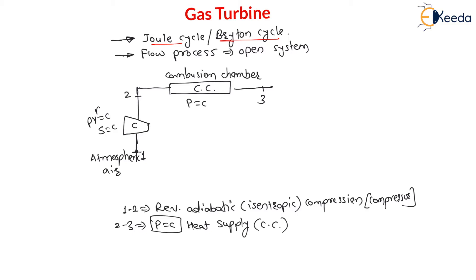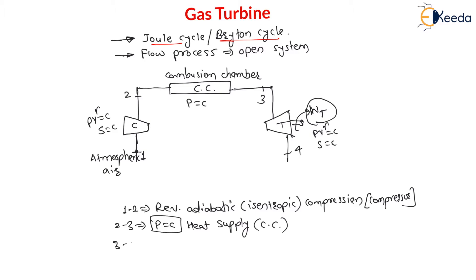After the heat is supplied, this gas is passed through the turbine, where it generates work output. The process from 3 to 4 is reversible adiabatic expansion, also called isentropic expansion, in the turbine. This process also follows pv raised to gamma equals constant, meaning entropy is constant. The turbine produces work output during this isentropic expansion.